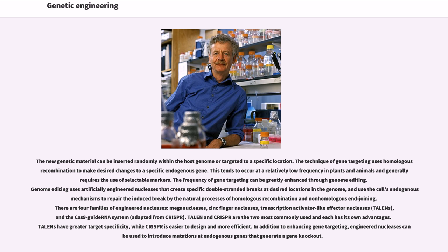The technique of gene targeting uses homologous recombination to make desired changes to a specific endogenous gene. This tends to occur at a relatively low frequency in plants and animals and generally requires the use of selectable markers. The frequency of gene targeting can be greatly enhanced through genome editing. Genome editing uses artificially engineered nucleases that create specific double-stranded breaks at desired locations in the genome, and use the cell's endogenous mechanisms to repair the induced break by the natural processes of homologous recombination and non-homologous end joining. There are four families of engineered nucleases: meganucleases, zinc finger nucleases, transcription activator-like effector nucleases (TALENs), and the Cas9-guide RNA system adapted from CRISPR. TALENs and CRISPR are the two most commonly used; TALENs have greater target specificity, while CRISPR is easier to design and more efficient. Engineered nucleases can also be used to introduce mutations at endogenous genes that generate a gene knockout.